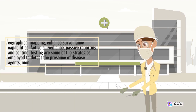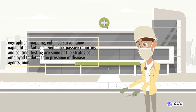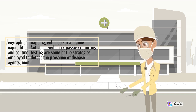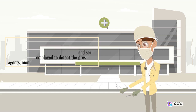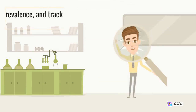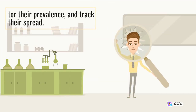Active surveillance, passive reporting, and sentinel testing are some of the strategies employed to detect the presence of disease agents, monitor their prevalence, and track their spread.